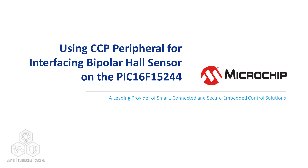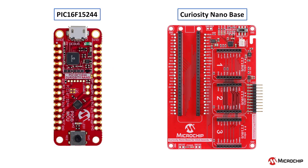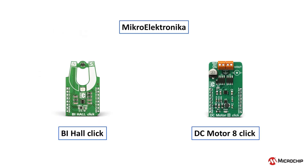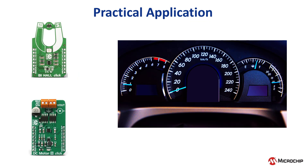Hey guys, Ethan from Microchip Technology. Today we're going to take a look at a demo developed by our applications team that measures the speed and distance covered by a small rotating wheel. This demonstration displays the capabilities of our PIC-16F15244 microcontroller on the Curiosity Nano development board, along with two click boards from Microelectronica: the DC Motor 8-click and the bi-Hall click. This application can be expanded to implement a speedometer for bicycles, automobiles, and other forms of transportation.